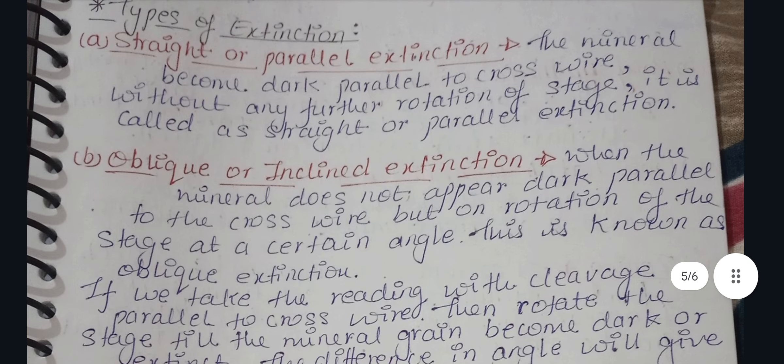The first type is straight or parallel extension. What is straight or parallel extension? When the mineral becomes dark parallel to the cross wire without any further rotation of the stage, it is called straight or parallel extension.